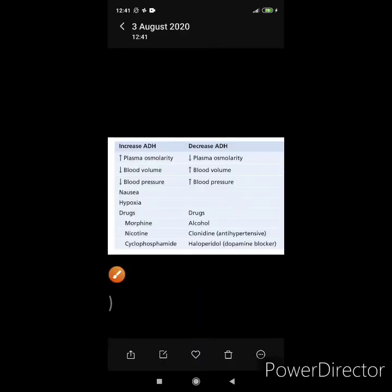Here is a list of factors that increase ADH and factors that decrease ADH. Factors that increase ADH: increased plasma osmolarity, decreased blood volume, decreased blood pressure. Nausea is also a potent stimulus for ADH secretion - nausea even without vomiting can increase ADH level as much as 100 times normal. In addition, hypoxia increases ADH, and drugs like morphine, nicotine, and cyclophosphamide can increase ADH.